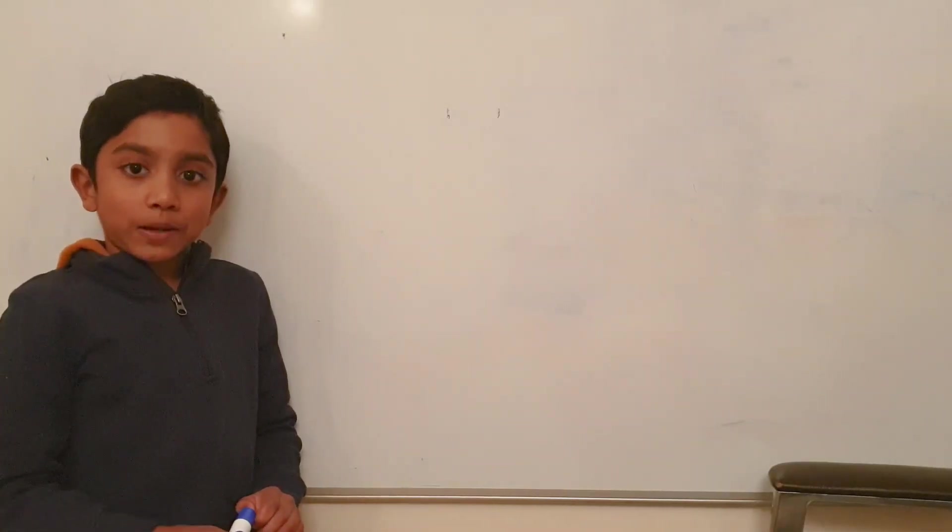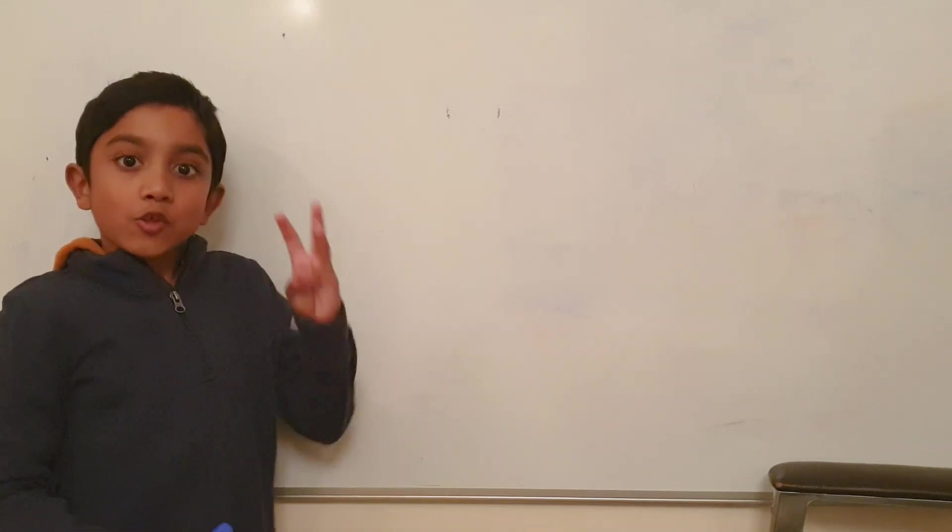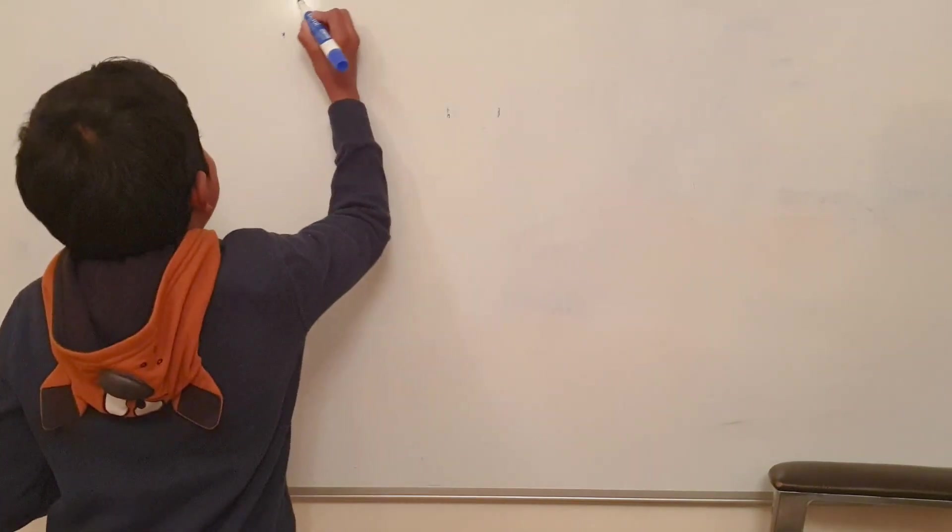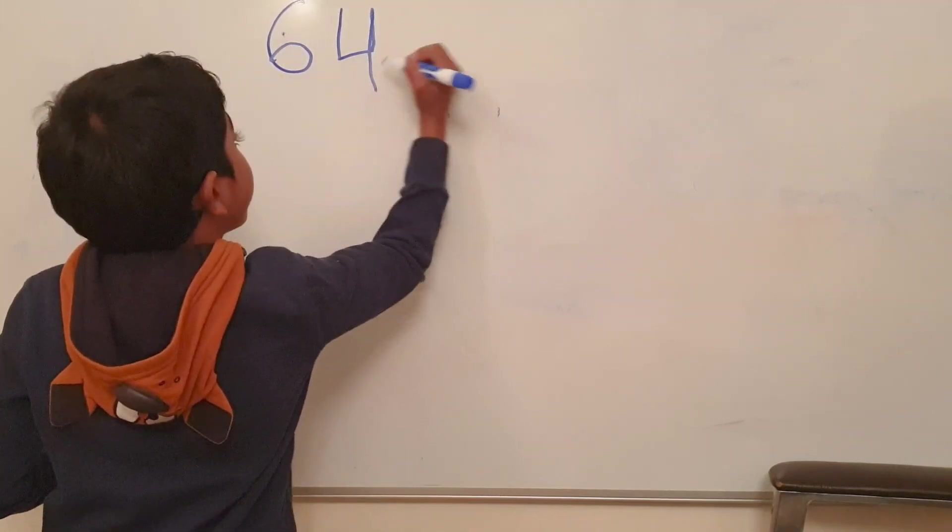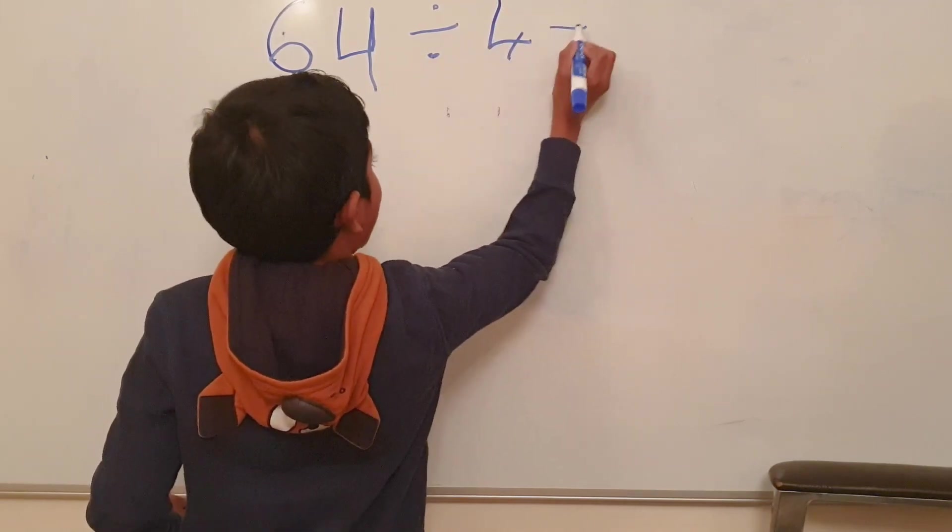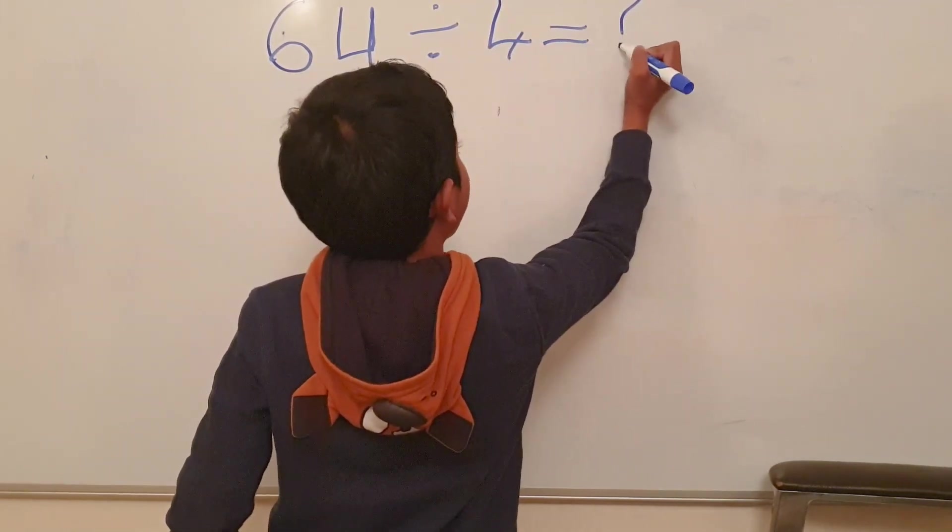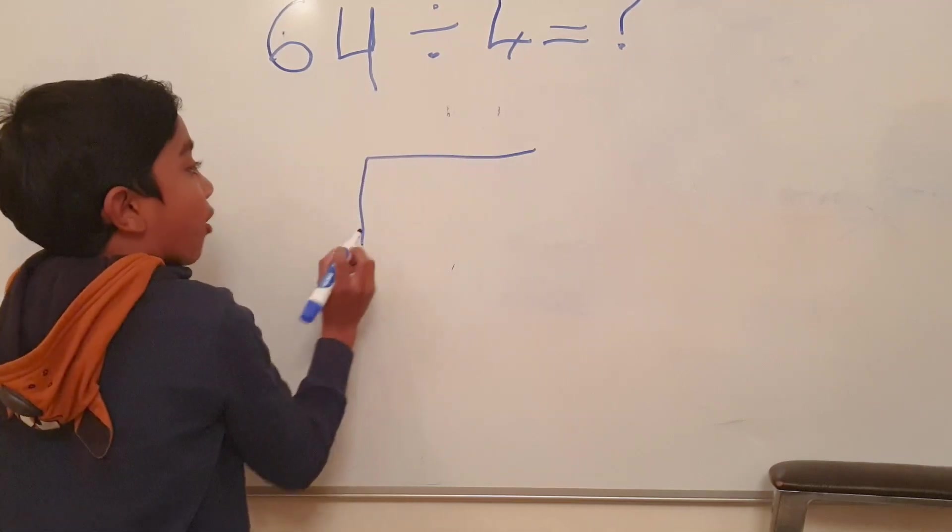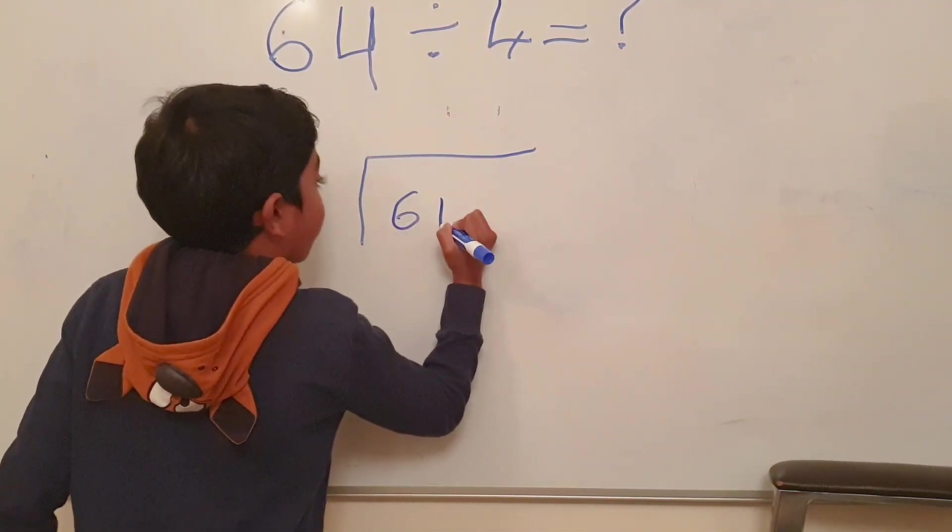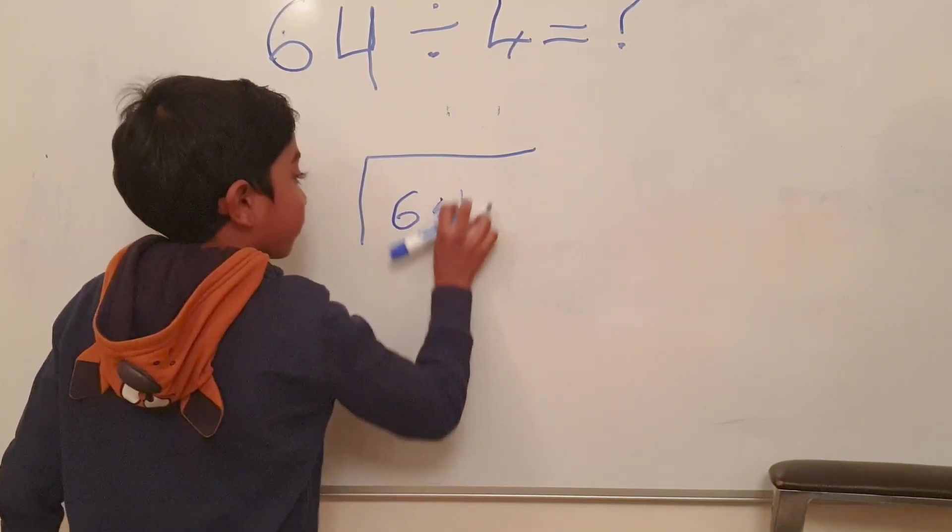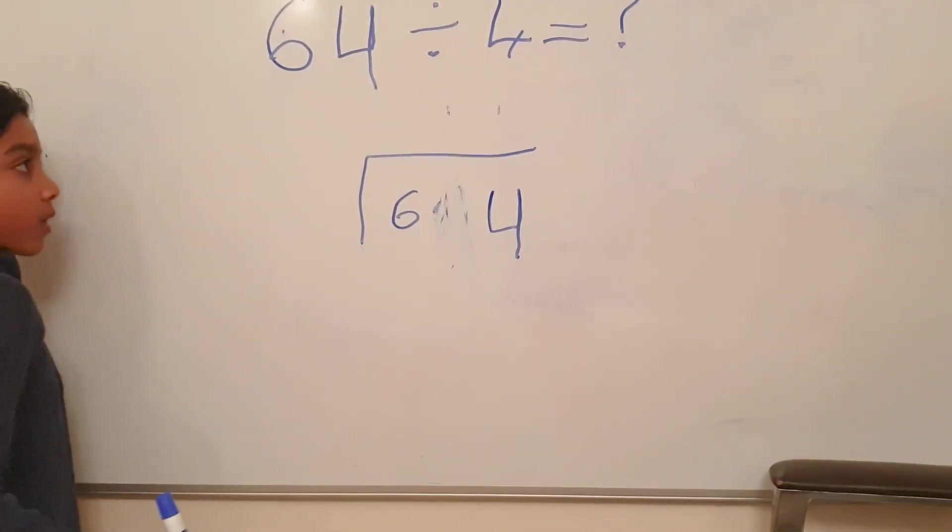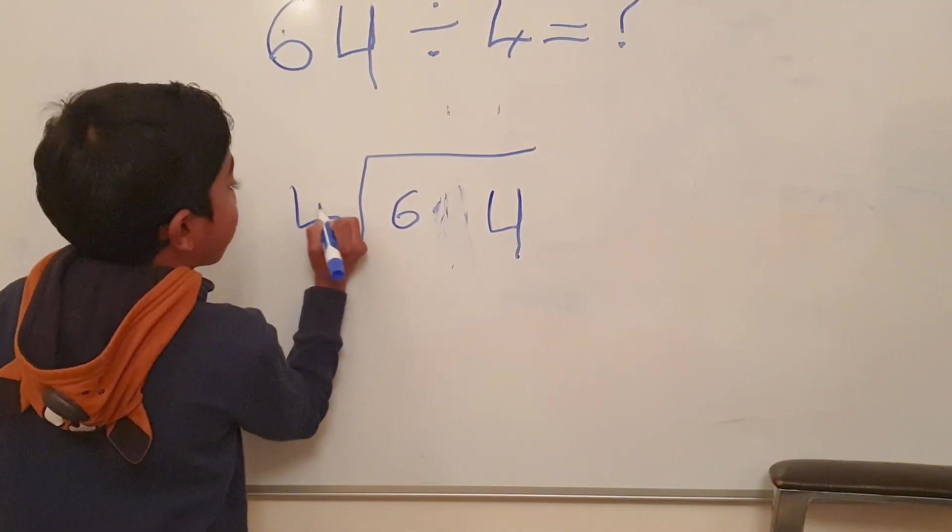Hi again, I'm going to explain the bus stop method in three examples. Example number one, 64 divided by 4 equals to a mystery. Here we have our bus stop. Place 64 in the bus stop. Now put 4 outside the bus stop.